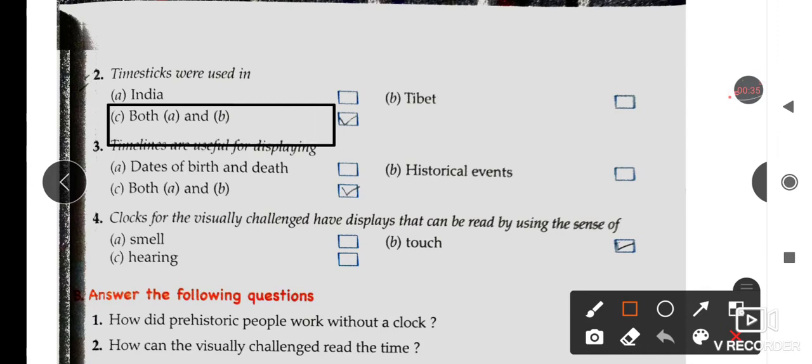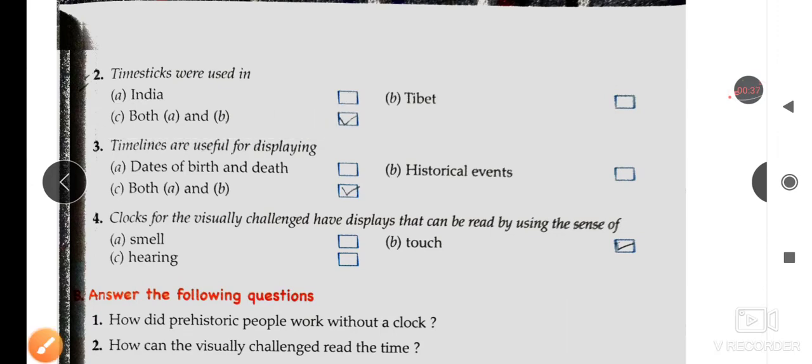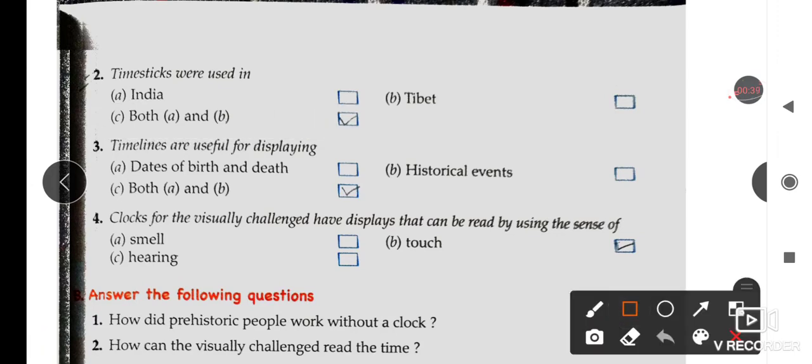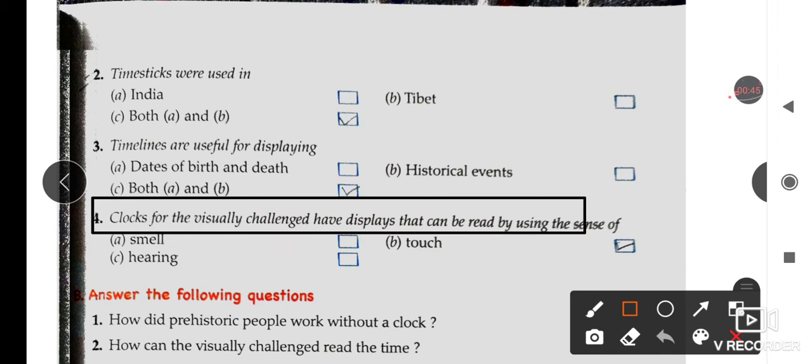Question 3: Timelines are useful for displaying both A and B - dates of birth and death, and historical events. Option C is correct. Question 4: Clocks for the visually challenged have displays that can be read by using the sense of touch. Option B is correct.